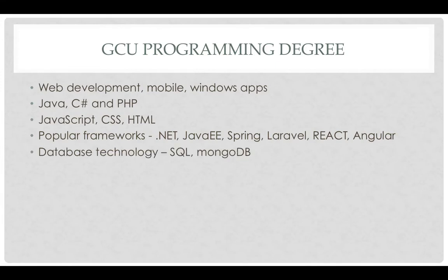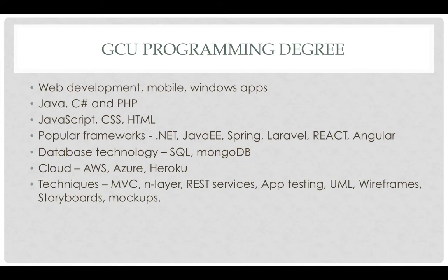In database technology, we use various forms of SQL and a little bit of NoSQL. We work with cloud technologies such as Amazon Web Services, Microsoft Azure, and Heroku. We work with different techniques as you design software, including the MVC design pattern, N layers, and REST services. We do application testing. Students draw UMLs, create wireframes, storyboards, and mockups. So by the time you graduate, you have experience not only in coding, but in design.